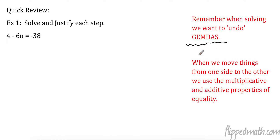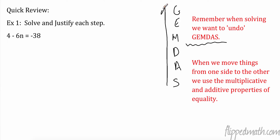When we solve equations, we want to use GEMDAS: grouping, exponents, multiply, divide, add, and subtract. When we do this, we're going to undo it — instead of going this way, we go backwards. We're going to undo GEMDAS, unwrapping the present. And when we move things from one side to the other, we use the multiplicative and additive properties of equality.